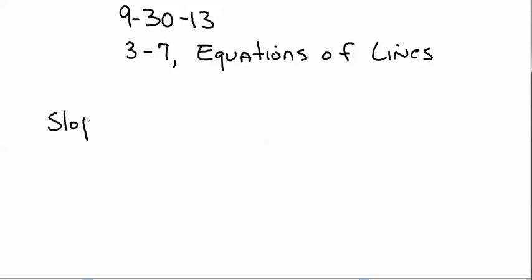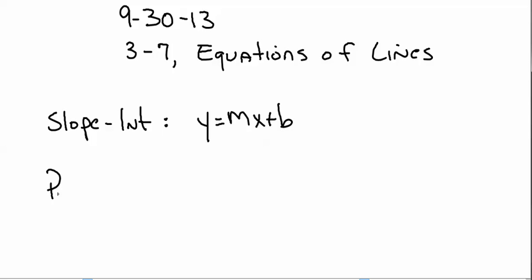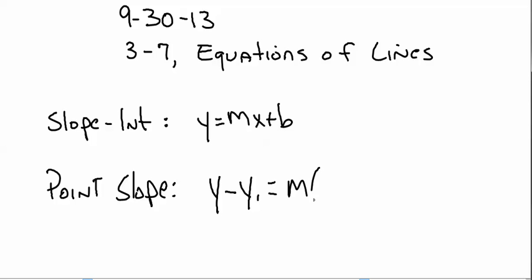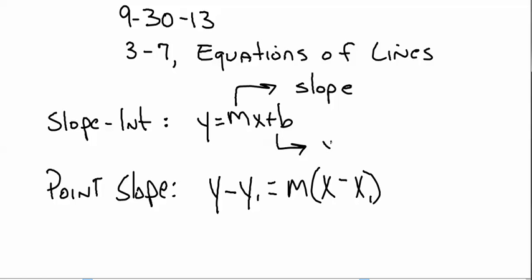Slope-intercept form is y equals mx plus b. Point-slope form is y minus your y-value equals the slope times the quantity x minus your x-value at a point on the line. In slope-intercept form, m is the slope and b is the y-intercept where the line hits the y-axis.